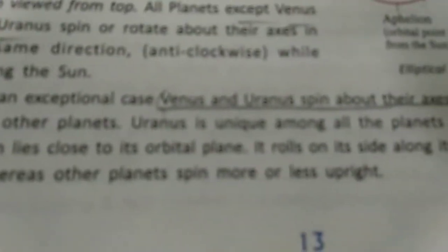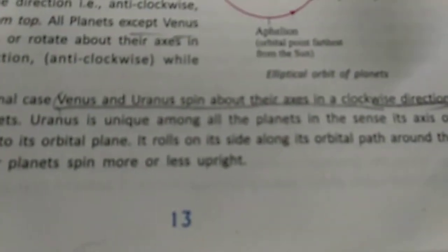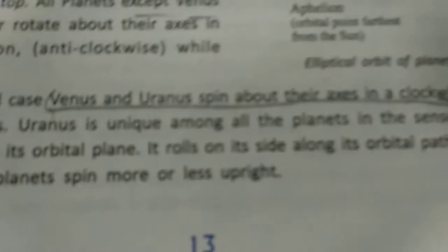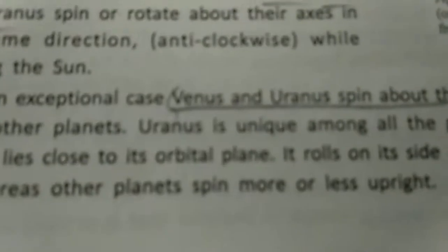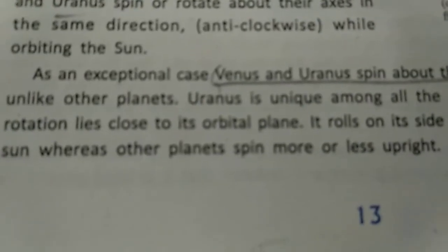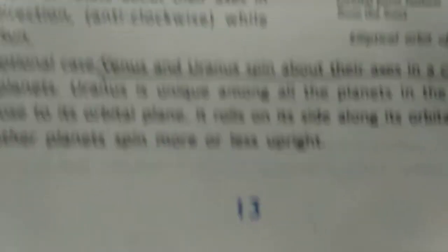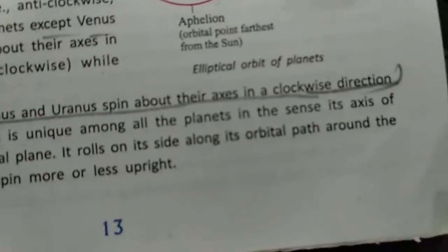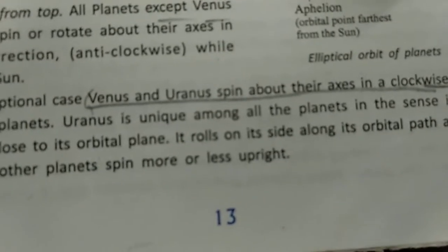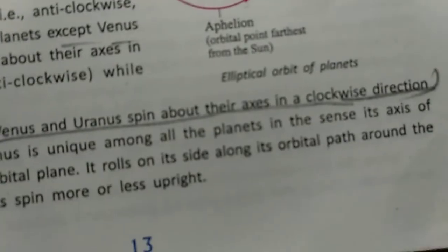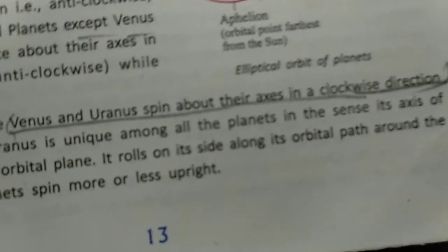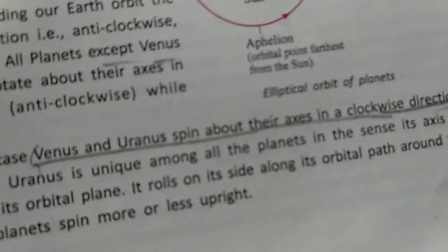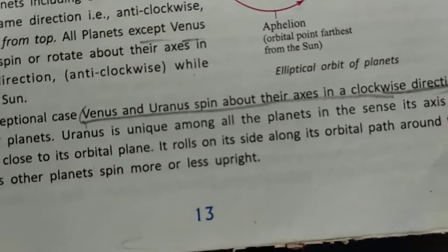Venus and Uranus spin about their axis in a clockwise direction, while the other planets move in the anticlockwise direction. Uranus is unique among all the planets in the sense that its axis of rotation lies close to the orbital plane — it rolls on its side along its orbital path, whereas the other planets spin more or less upright.